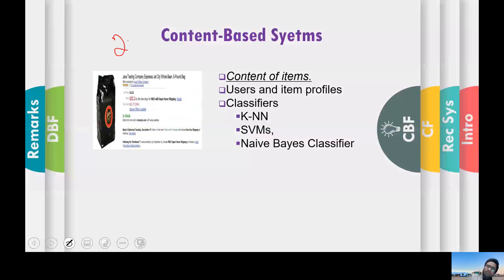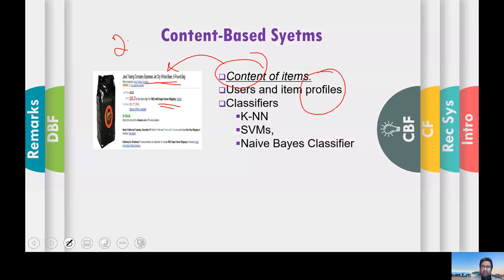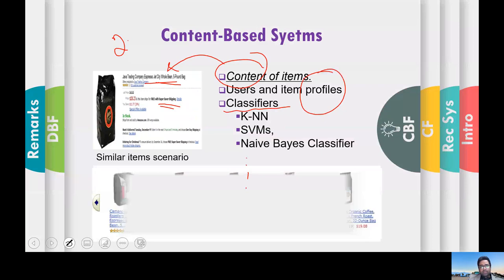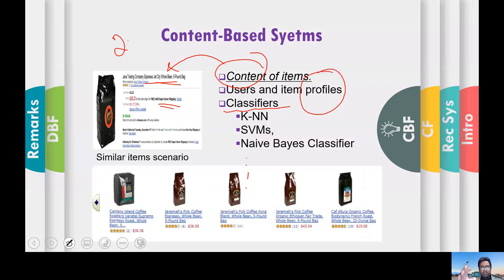In content-based filtering, you go to the content of the item. For coffees you see the bean quality and quantity; for a movie you go to the genre, the actors and actresses, the reviews, and the tags. Based on those you build profiles, and then you can use different classifiers like k-nearest neighbors, support vector machine, or Naive Bayes to recommend or predict any item. In Amazon, the similar-items scenario may be using content-based filtering.